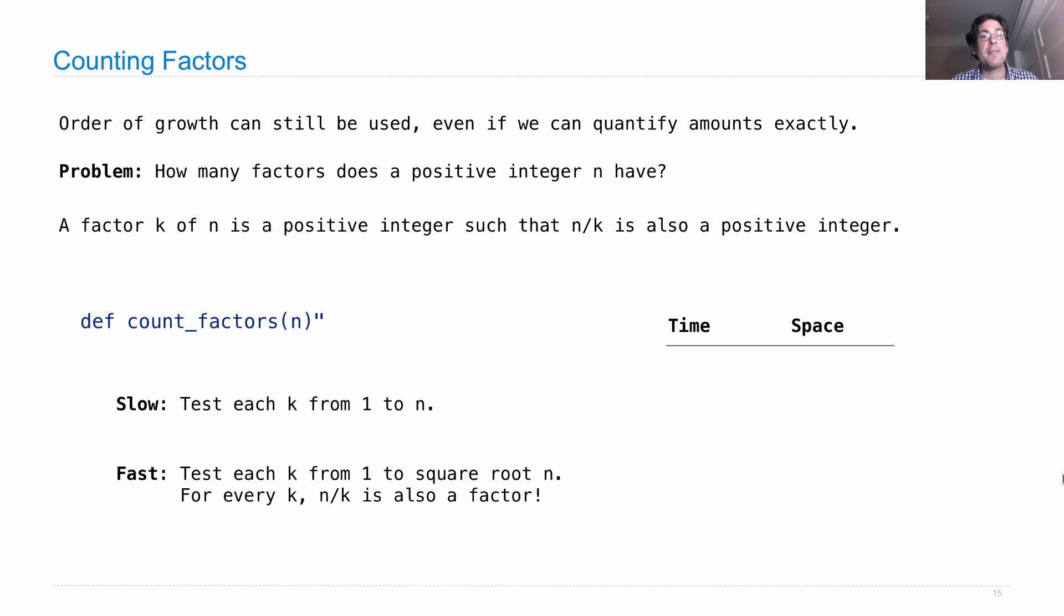How about another example? Counting factors. The order of growth idea can still be used even if we could exactly quantify the amount of time and space that this is going to use up, which we did before. The slow version we'll say is theta n with space of theta one, because all we do is remember how many factors there are as we go along.